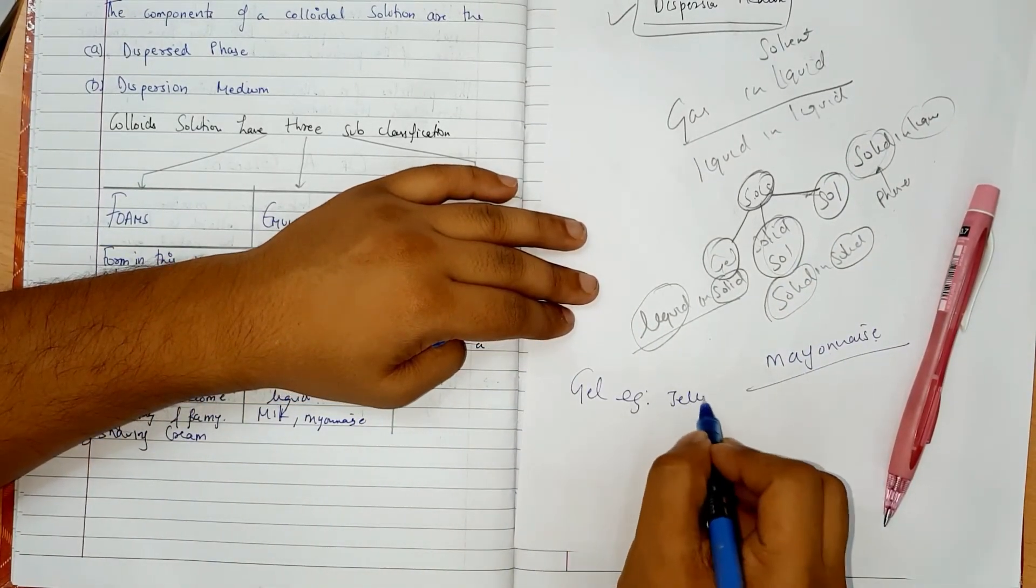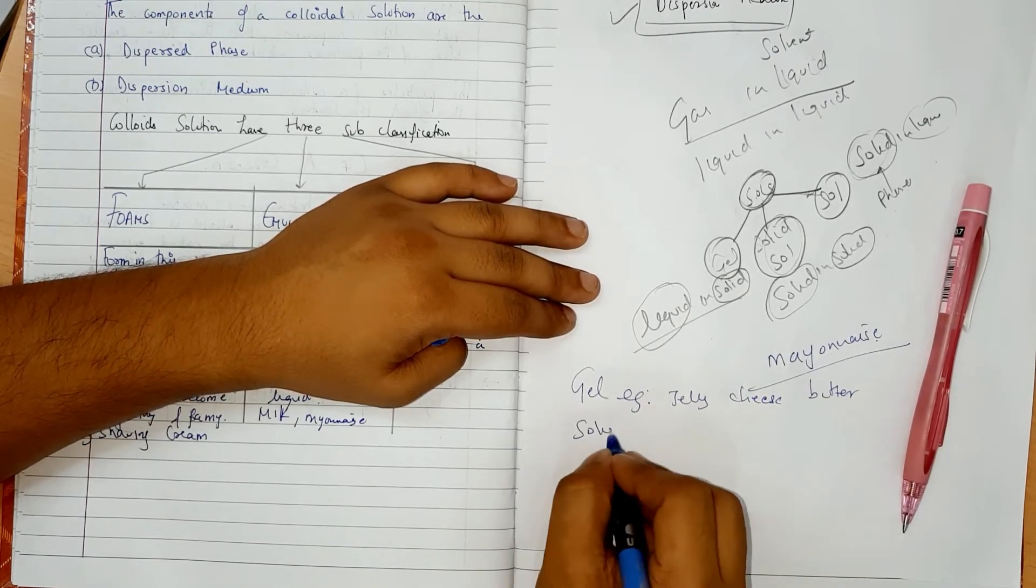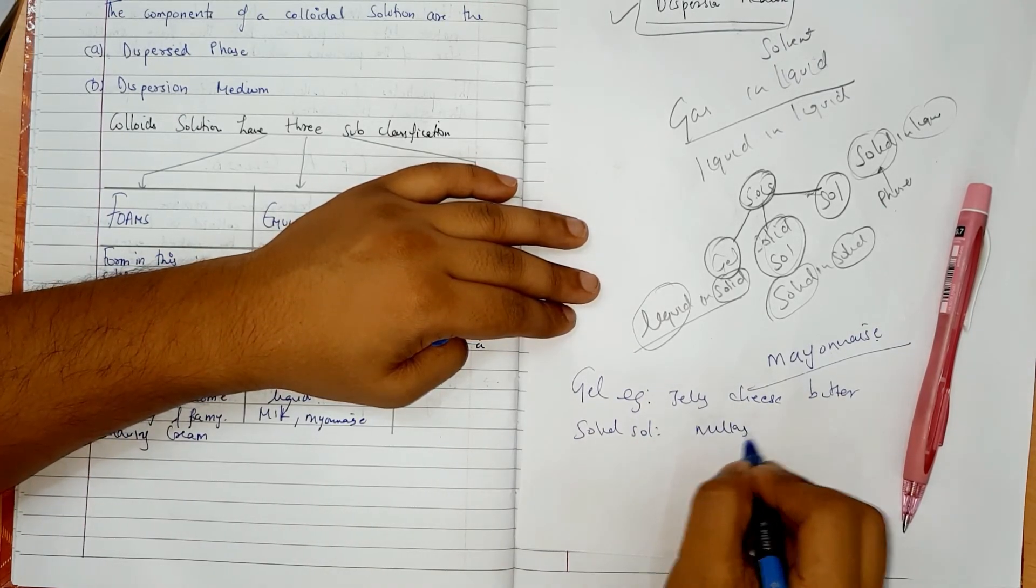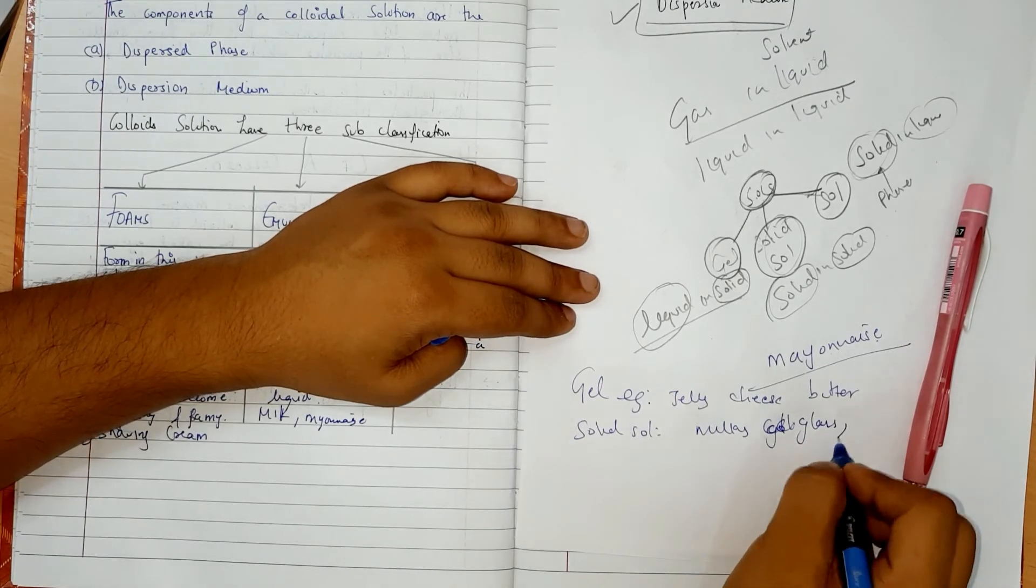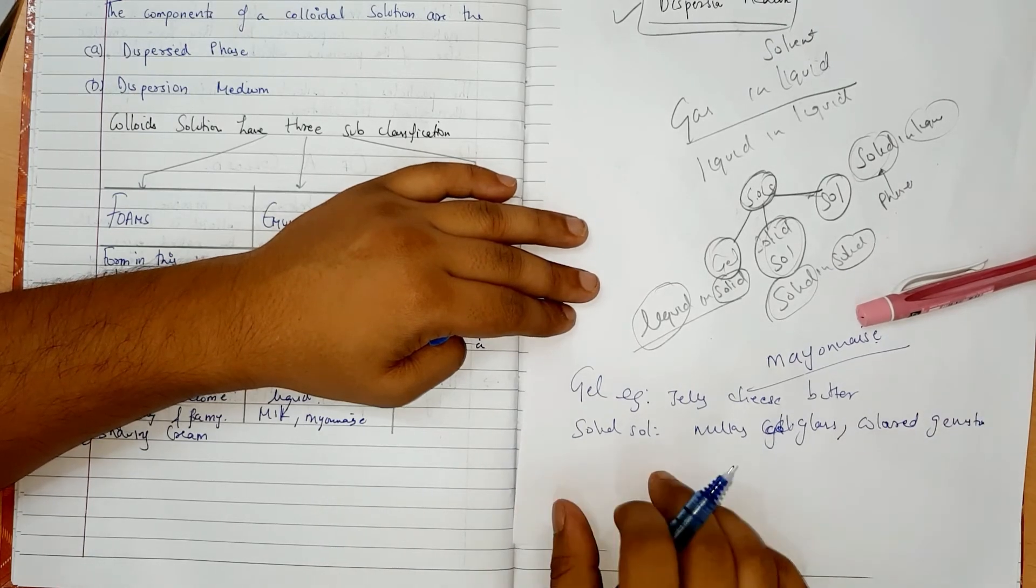What is the example we have? Jelly, cheese, butter. Next we have solid sol, solid sol means that both will be solid. So we can use the milky glass, colored gemstones, all are solid sols.